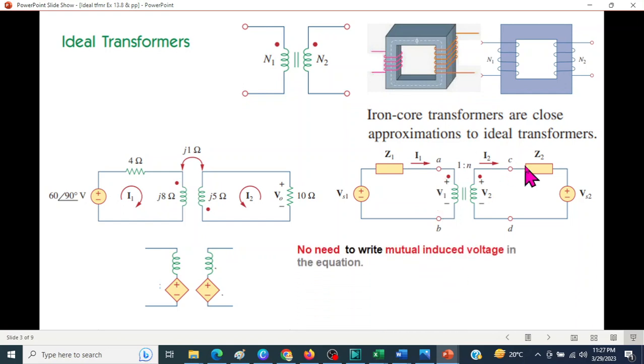In this type of transformer, we don't use the mutual induced voltages as it was done here. Rather, we'll use the transformation of voltage and currents. And I am sure you are familiar with this formula. V2 over V1 is N2 over N1, which is written as N. Similarly, I1 over I2 is N2 over N1, which is written as N. But we have to be careful in using these when there are dots. So we have to understand how to mark the polarity.